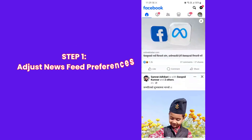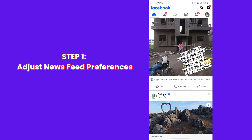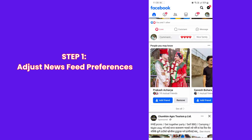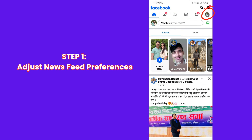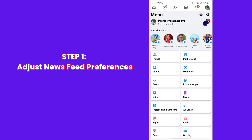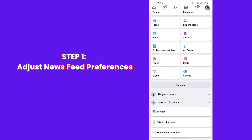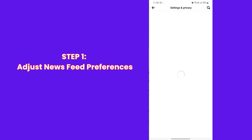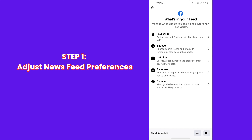Step 1: Adjust your Facebook news feed preferences. Your feed preferences help you control what you see on your feed. After opening the Facebook app, click on the three horizontal lines from the top right corner of the screen. Now scroll down and tap on Settings and Privacy, then tap on Settings. Here you will see various Facebook settings. Under Preferences, tap on News Feed to customize your news feed.